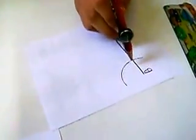Now with the same radius, the arc should intersect this line segment BC.